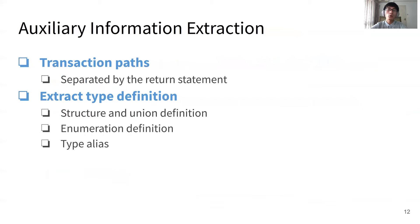Besides variable information, we also extract some auxiliary information, such as transaction paths separated by return statements, type definitions — for instance, structure and union definitions — and enumeration definition type aliases.